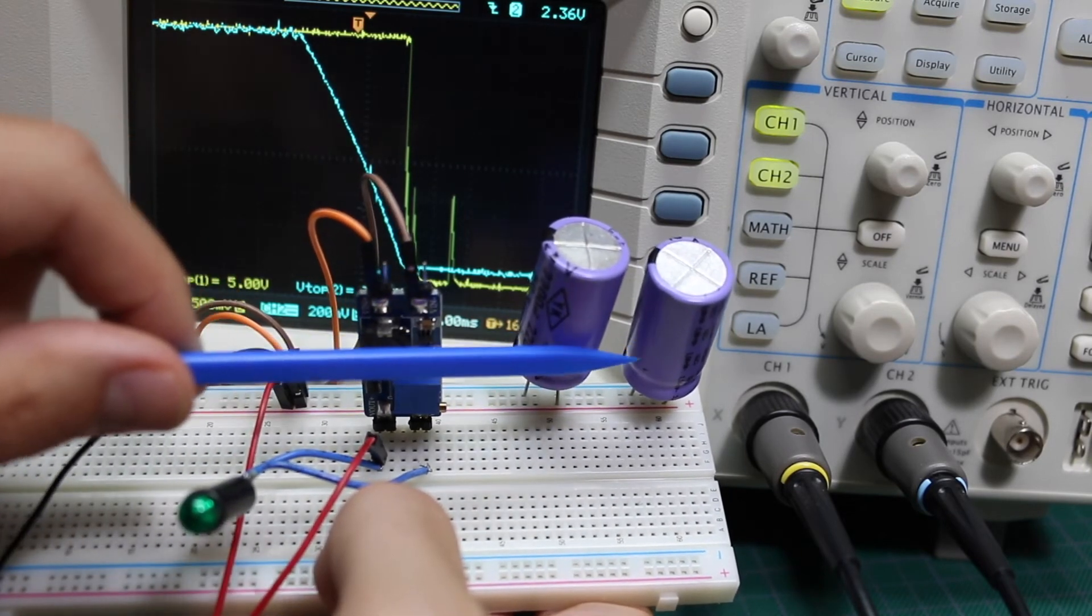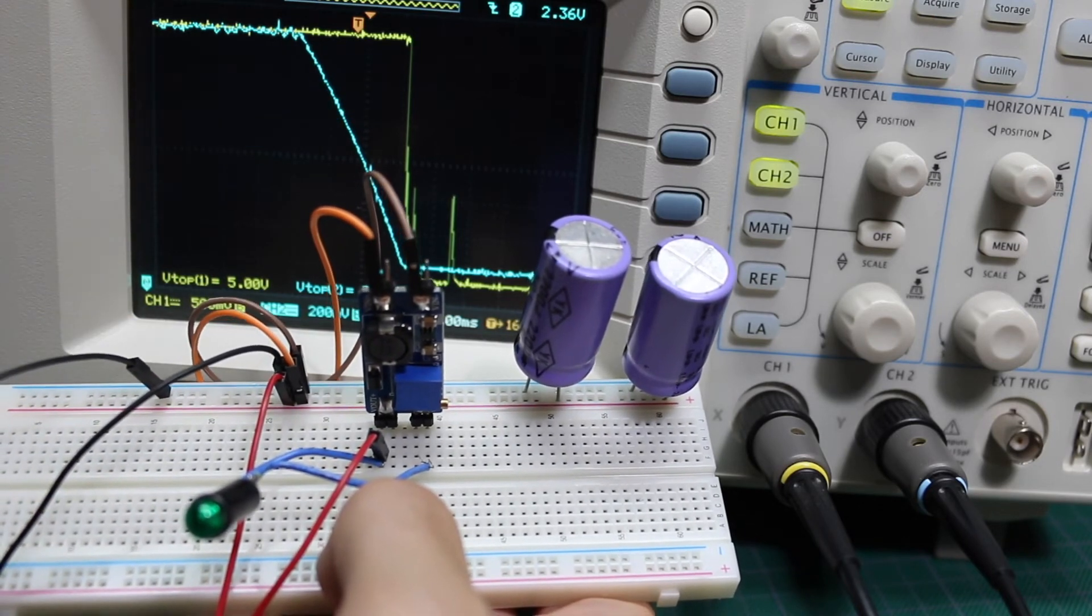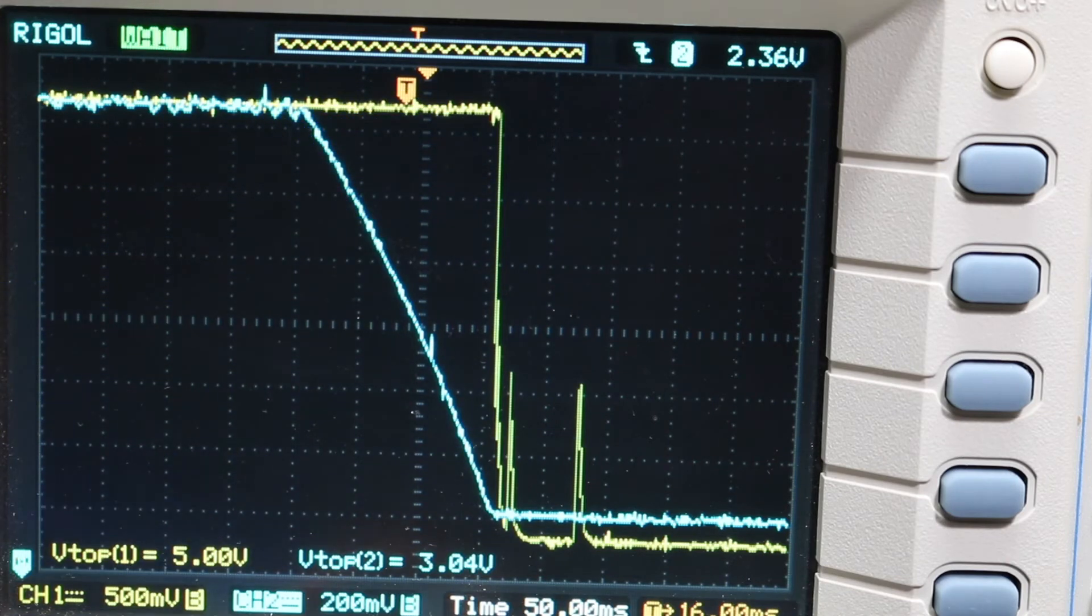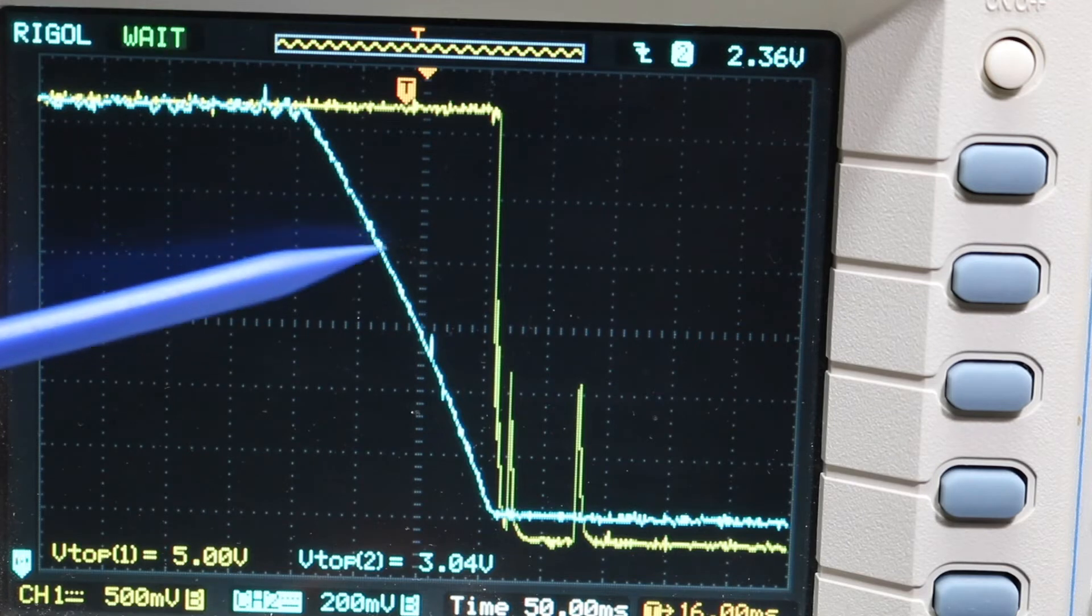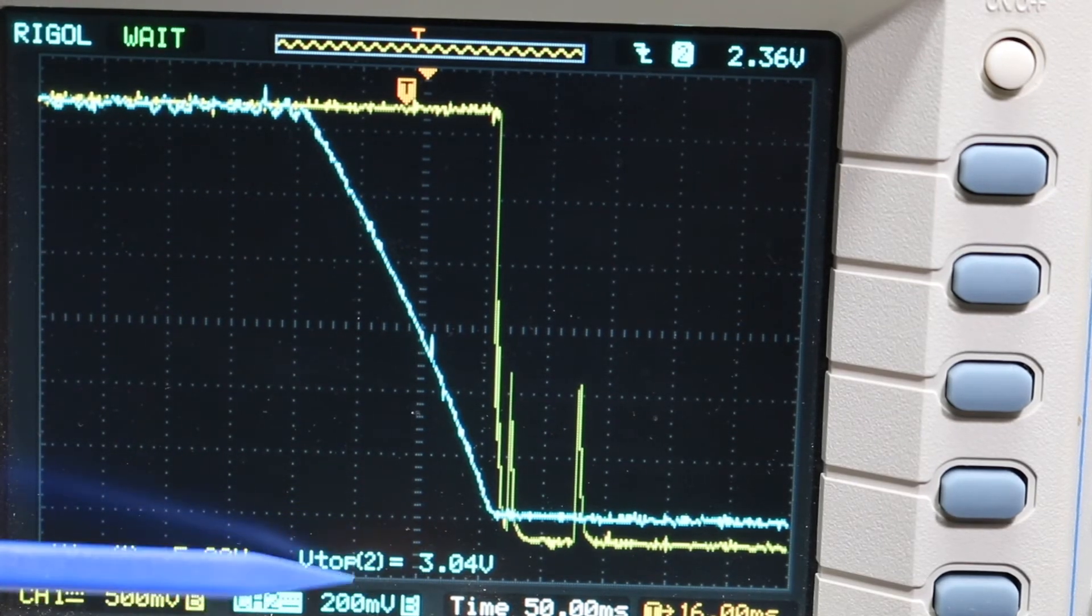As the capacitors take over to power the boost converter and the light eventually goes off, we can now see what's going on. So the yellow channel 1 trace is the 5 volt output for the light. The blue channel 2 trace is the input power rail.